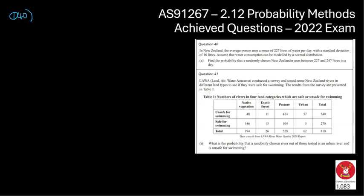So question number 40. In New Zealand, the average person uses a mean of 227 litres of water per day, with a standard deviation of 16 litres. I love seeing a mean and standard deviation because I know it's going to be a normal distribution question. Find the probability that a random New Zealander uses between 227 and 247 litres per day.